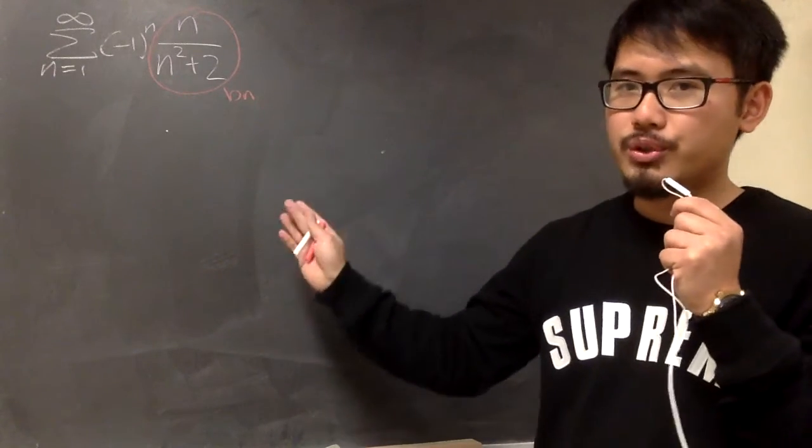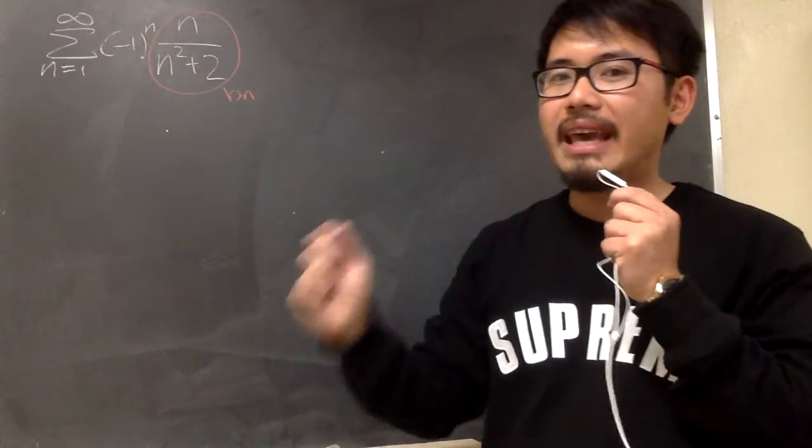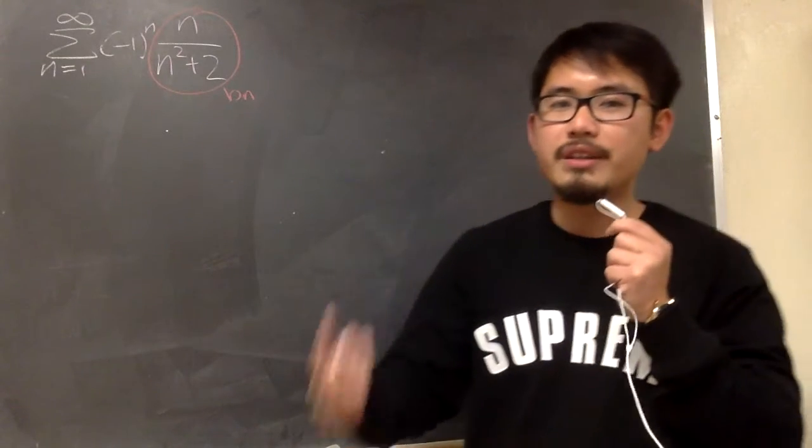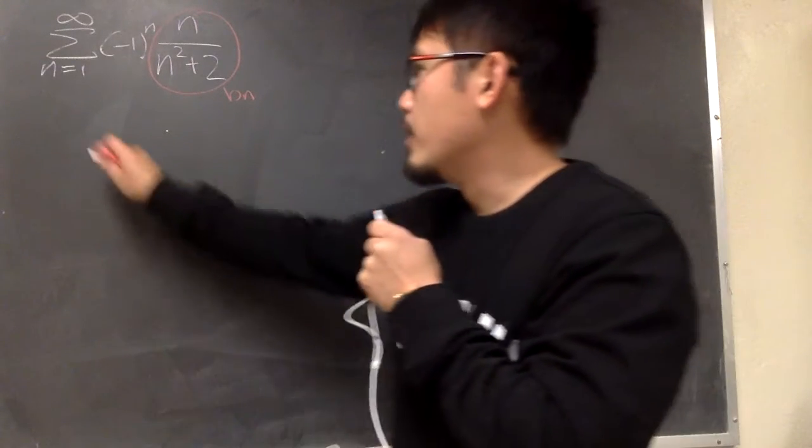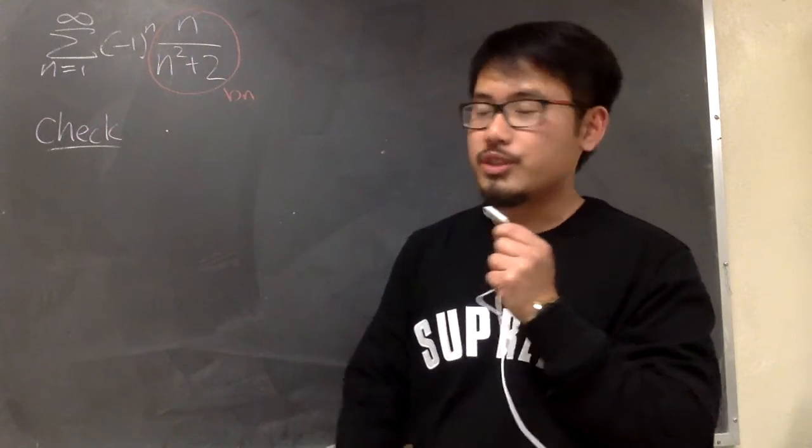If both of them are true, then we can say that this alternating series converges by the AST, alternating series test. These are the two conditions that I want to check. So let me just write it down for you guys to see how this works.